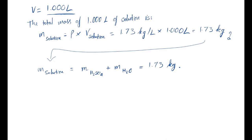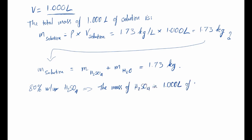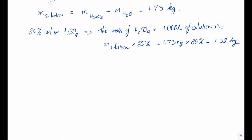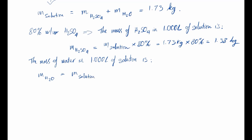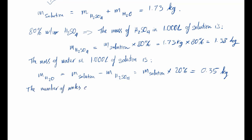Yes we can. From the question, the solution is 80% sulfuric acid by weight, meaning 80% of the total 1.73 kilograms is sulfuric acid and 20% is water. So the mass of sulfuric acid in one liter of solution is 1.73 kg × 80% = 1.38 kg, and the mass of water in one liter of solution is 1.73 kg × 20% = 0.35 kg.